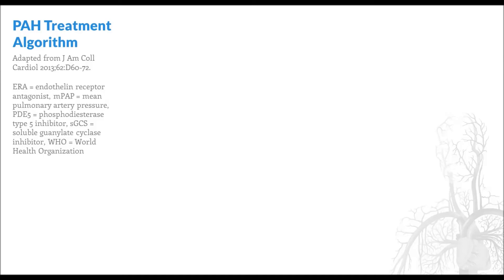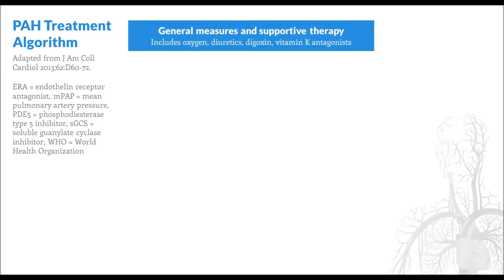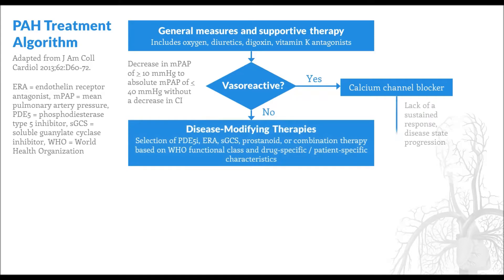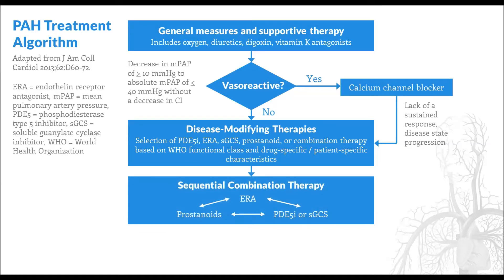Before we talk about specific therapies used in PAH, let's briefly go through how the disease was managed overall. Most patients will be considered for a number of general supportive measures, such as oxygen and diuretic therapy. Currently, it is still recommended that patients with PAH undergo vasoreactivity testing. Those with positive vasoreactivity, as determined by a decrease in mean pulmonary artery pressure of greater than or equal to 10 mmHg to an absolute mean pressure of less than or equal to 40 mmHg, may be considered for high-dose calcium channel blocker therapy. However, most patients will either not respond or not have a sustained response over time, and will require disease-modifying therapies such as phosphodiesterase inhibitors or endothelin antagonists. Further disease progression warrants the use of sequential combination therapy. Advanced therapies include balloon atrial septostomy, where a hole is made between the atria to relieve right ventricular stress, and lung transplantation.